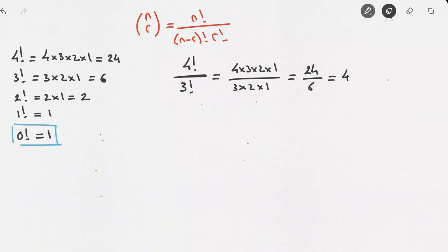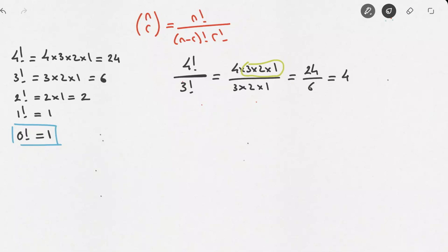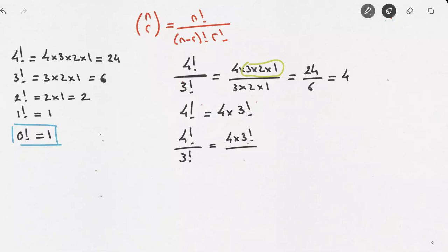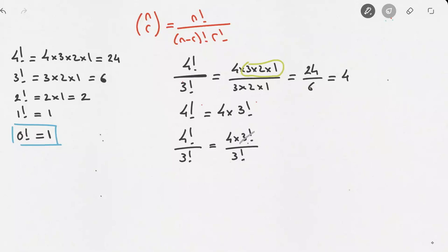So it's important to know a faster simplification technique. Notice that in 4!, the last three digits are exactly the same as 3!. In other words, 4! equals 4 times 3!. So 4! over 3! is really 4 times 3! over 3!, and we can simplify by crossing out the 3!'s, leaving us with just 4.